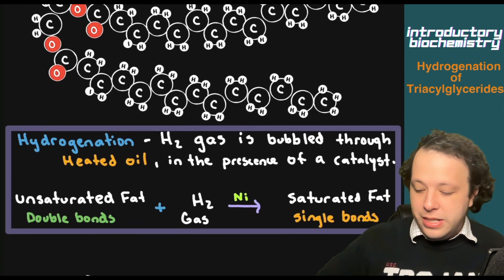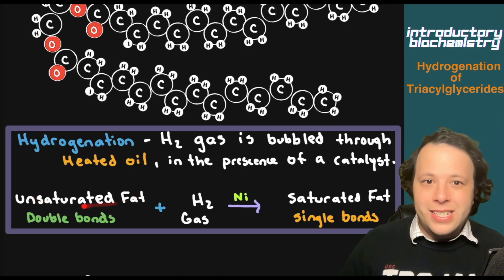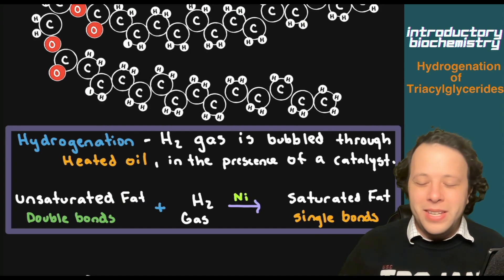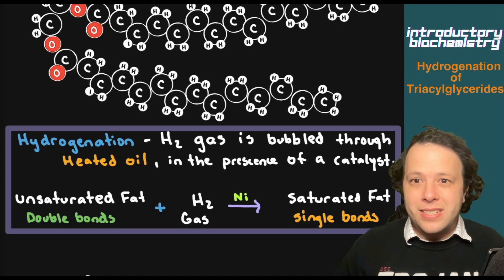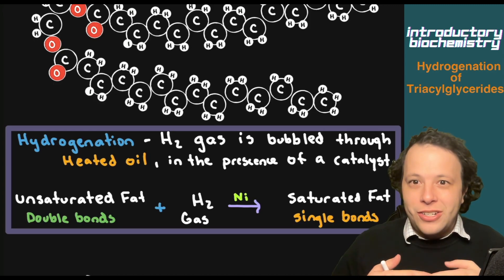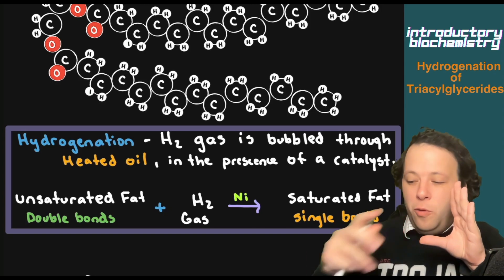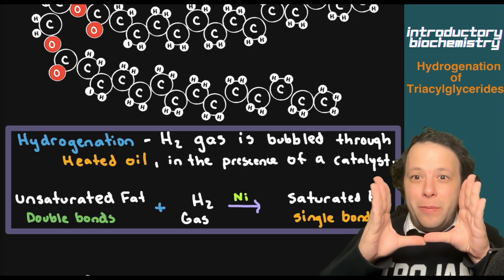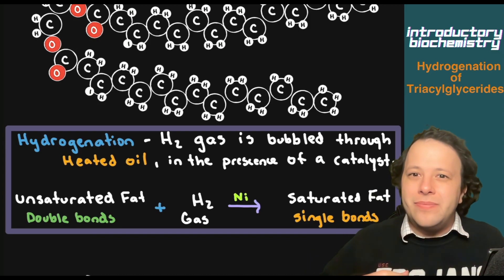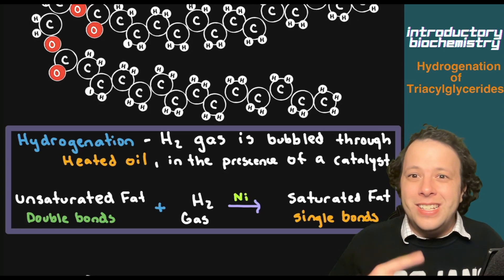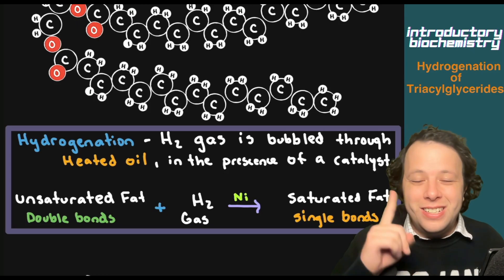So when they do this in industry, they will take an unsaturated fat — which is typically a liquid or something that's a little goopy — and when you add hydrogen to it, it's going to remove the double bonds and turn them into single bonds. If you think back to my previous videos on organic chemistry and addition reactions, it's like if we had the double bond opening up — like opening up doors — and we're going to be adding hydrogen to each of those.